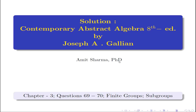Hello viewers, welcome to MagTag. I am Amish Sharma. In this video we are going to solve questions 69 to 70 of Chapter 3 from the book Contemporary Abstract Algebra by Joseph Galian. So without delay, let's start.